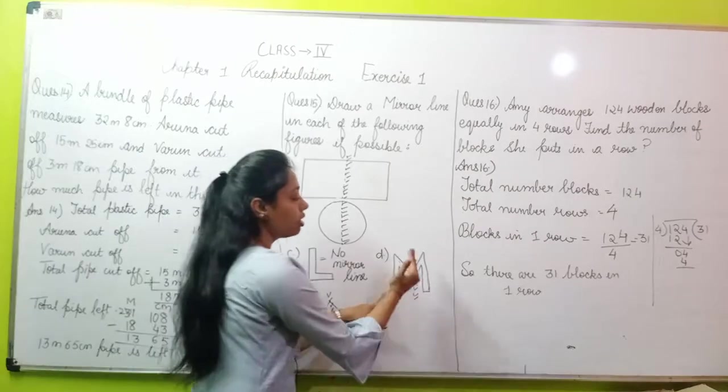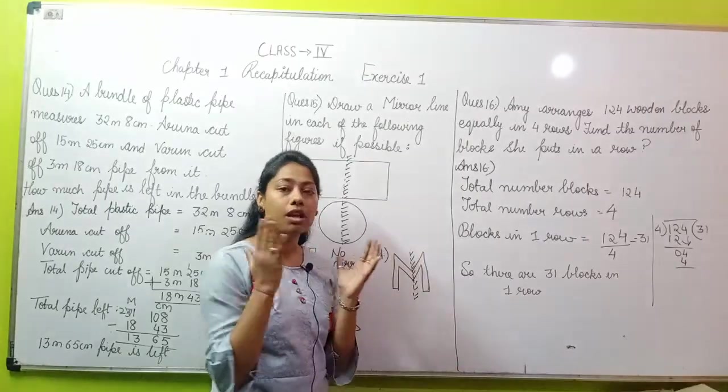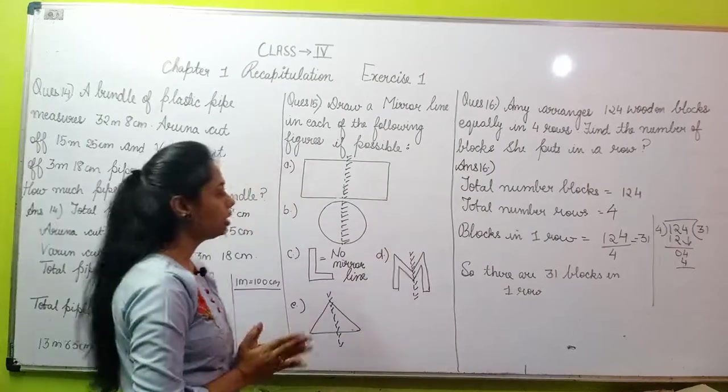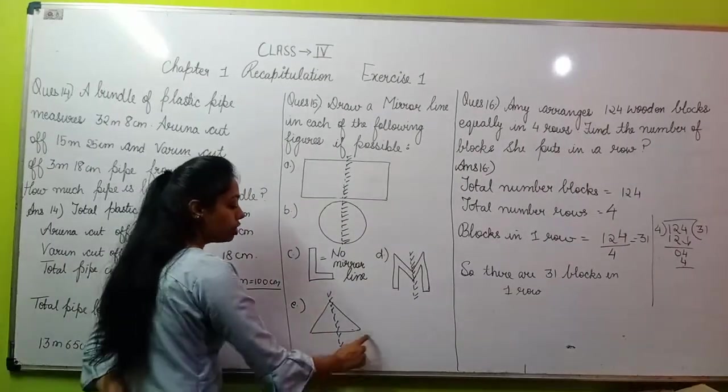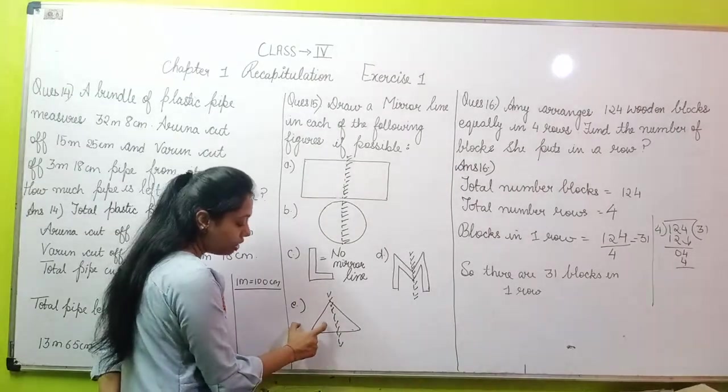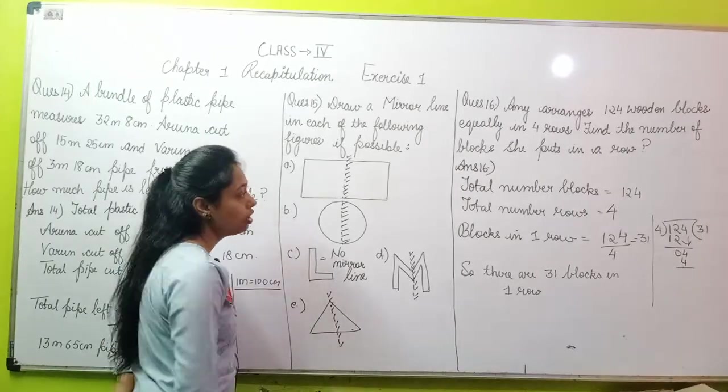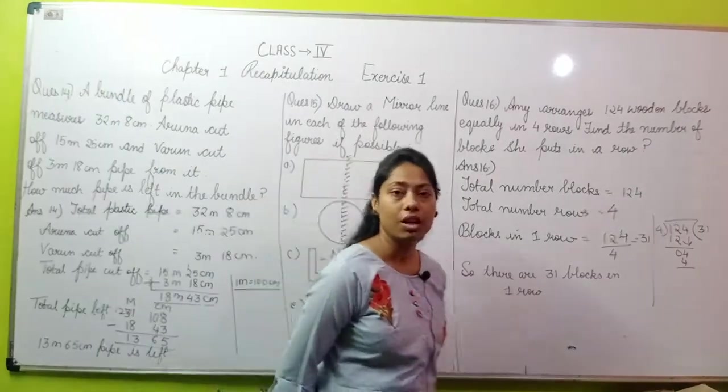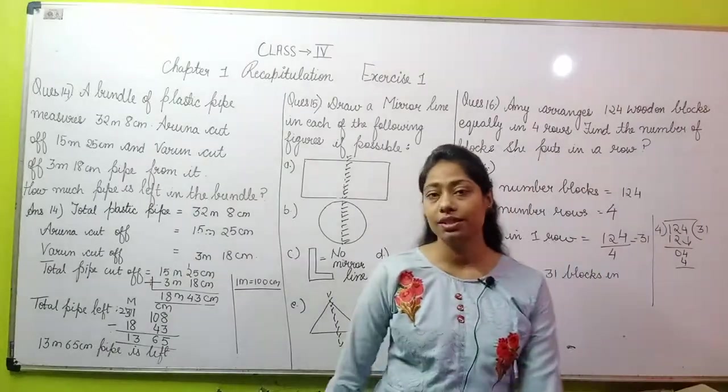Moving to the (d) part - M. In M also, if we put a mirror here, then the left part and right part look the same and equal. In (e), a triangle is given. Look at this triangle - if I put a mirror line here, then this part and this part will look the same. So this was all about your mirror line, that is question number 15.